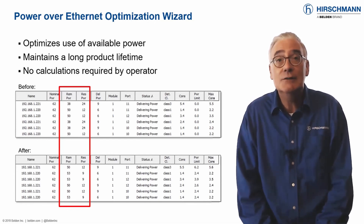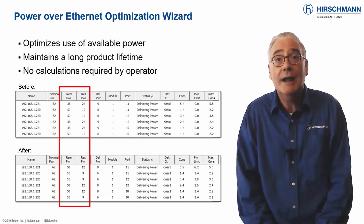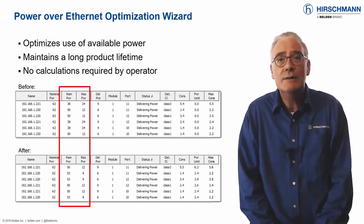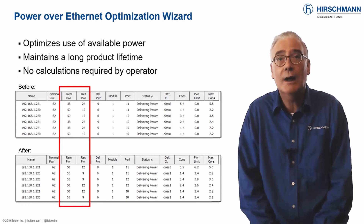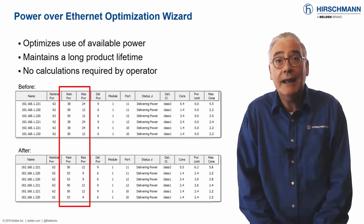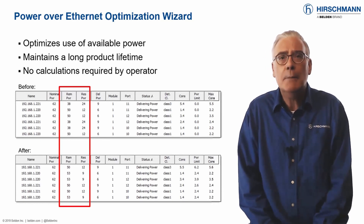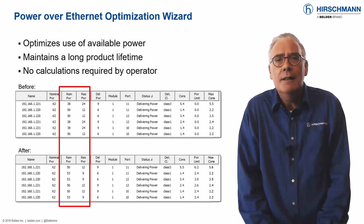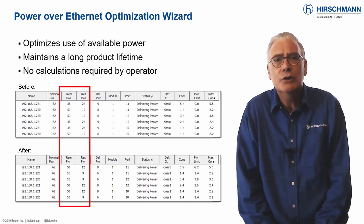Industrial HiVision includes a PoE wizard. This wizard will override the standard PoE classes. With no intervention from an administrator, the wizard will calculate the maximum power required by each device on the network. It will allocate the relevant power to each port. Remaining power is then available for use by other devices. This is the most efficient use you can make of limited PoE.